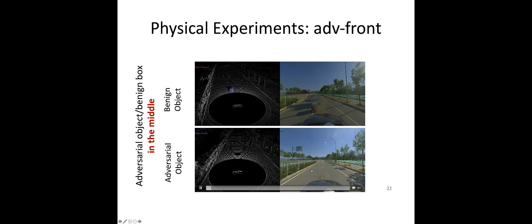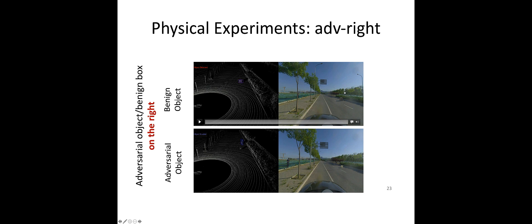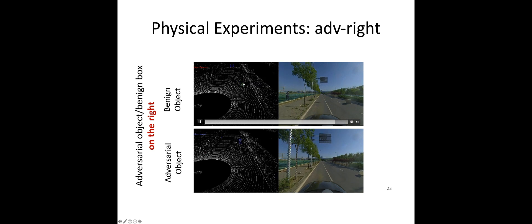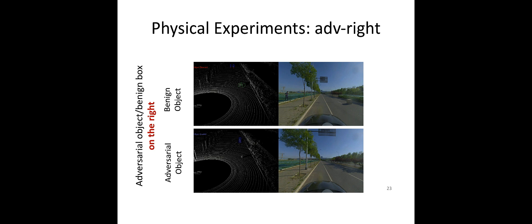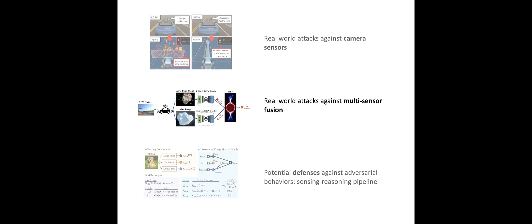Similarly, we placed the object on the right side of the car instead of directly in front, and observed the same phenomenon — the box is detected in the benign environment, but not the adversarial object. So we can see single sensors, whether camera or LiDAR, are very vulnerable. People may ask that in practice, we always use smart sensor fusion systems, making it very hard to generate adversarial objects that can fool multiple sensors simultaneously. To answer that, we want to look into the vulnerability of multi-sensor fusion (MSF) systems.